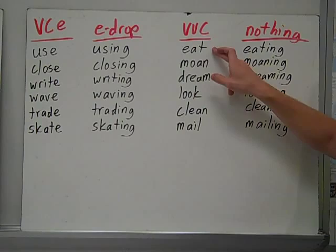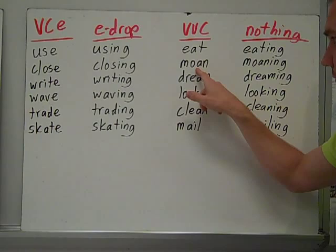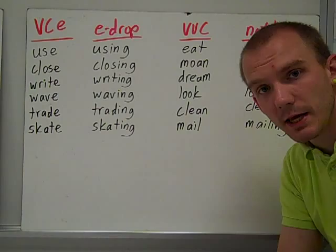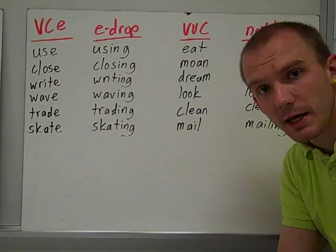VVC words: 'eat' becomes 'eating,' 'moan' becomes 'moaning.' Notice you have two vowels in a row — VVC. Then you add the -ing ending and you just do nothing. It also creates a long vowel sound. So you're listening for long vowel sounds, determining which pattern, and then determining whether it's e-drop or nothing. 'Dream' becomes 'dreaming,' 'look' becomes 'looking,' 'clean' becomes 'cleaning.'